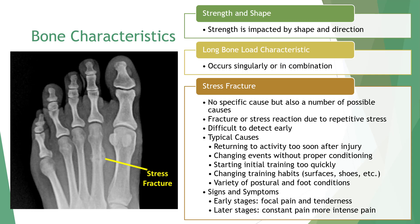Stress fractures occur with no single specific cause but with a number of possible contributing factors. The most common is overload due to muscular contraction, altered stress distribution due to muscle fatigue, changes in training surface, and rhythmic repetitive stress vibrations. Bone becomes susceptible early in training due to increased muscular forces and initial remodeling and reabsorption. Progression involves focal microfracture, periosteal or endosteal response, linear fractures, and possibly displaced fractures.